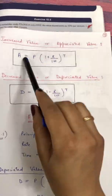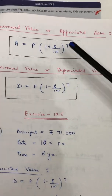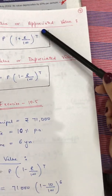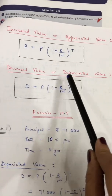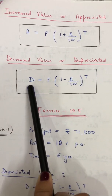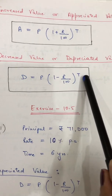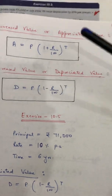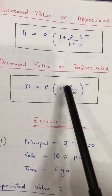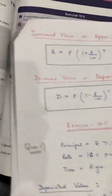In Exercise 10.5, we have to use two formulae. For increased or appreciated value, the formula is: Amount = Principal × (1 + r/100)^t — the same formula from previous exercises. For decreased or depreciated value, we write: D = Principal × (1 − r/100)^t. The only difference between the two formulas is the plus or minus sign.